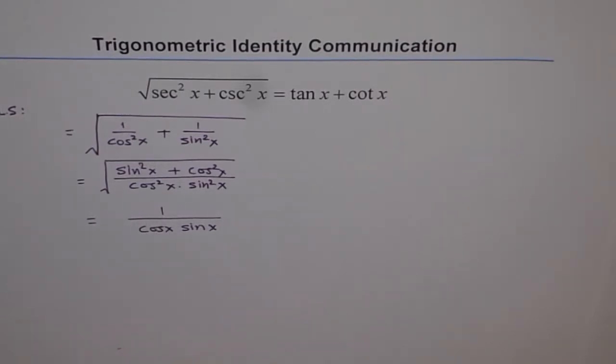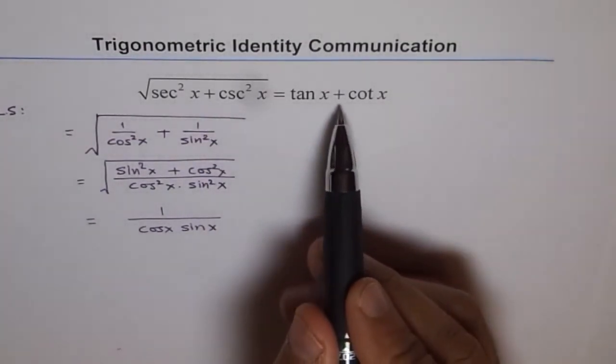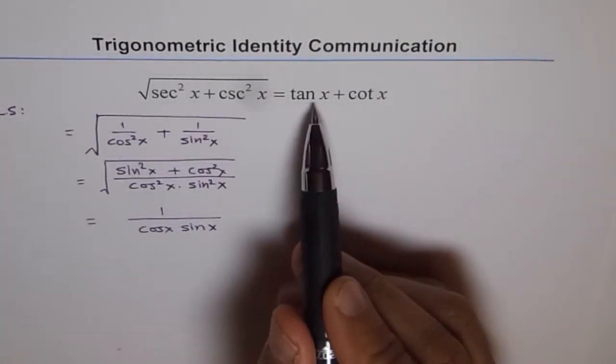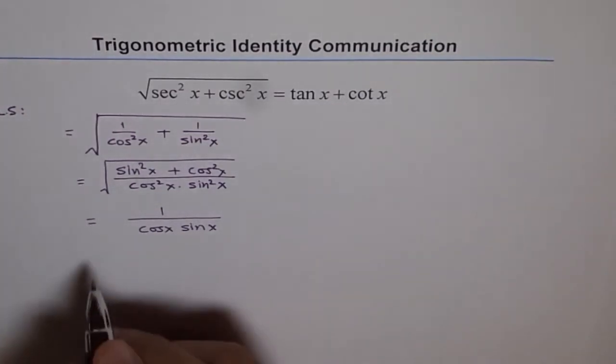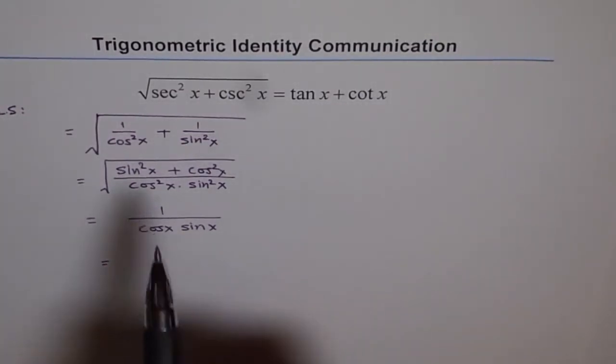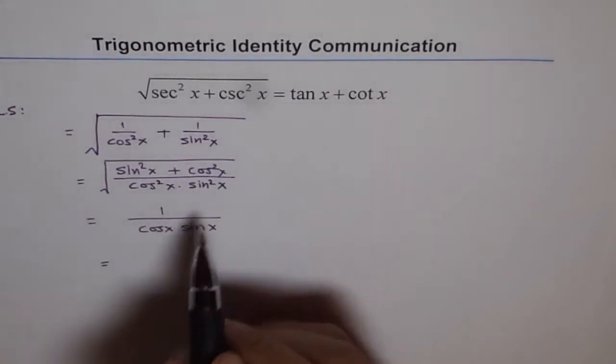So we get that. Now, we need to prove that this left side is tan x plus cotangent x. How are we going to get tan x plus cotangent x? See the trick. We wrote here sine square x plus cos square x is 1.